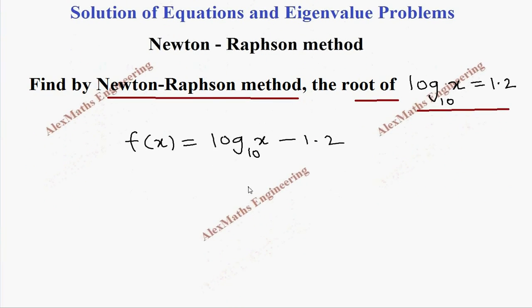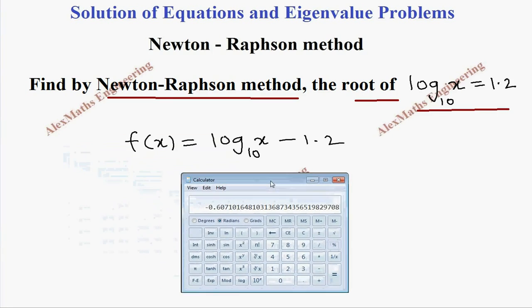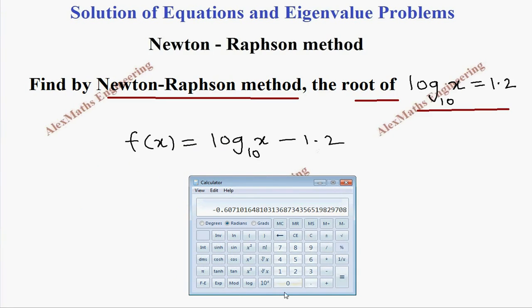I have to get two x values so that f of x value changes its sign. If I take 1, log 1 is 0, I am getting negative. Log 2 and minus of this is still negative. So I have to go for higher values. Log 3, still 0.477 minus 1.2 is negative. So 4, 5, again it will be negative. Then let's go for a higher value 10. Log of this is 1, 1 minus 1.2 is still negative.